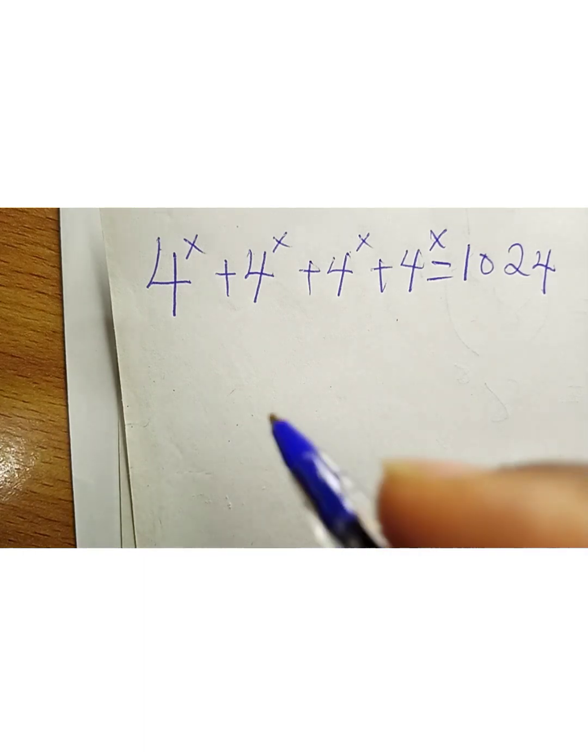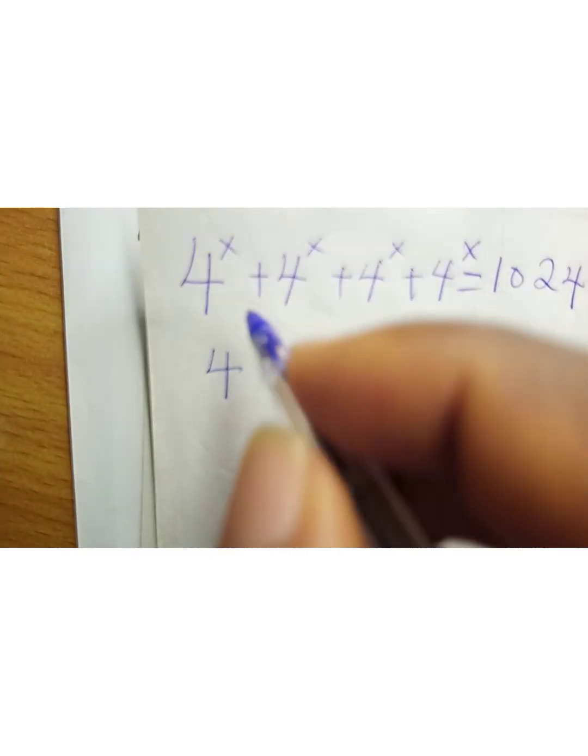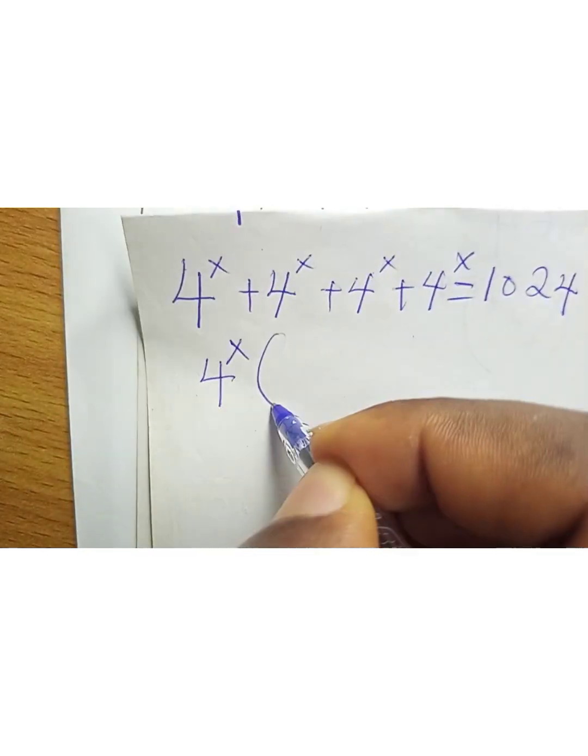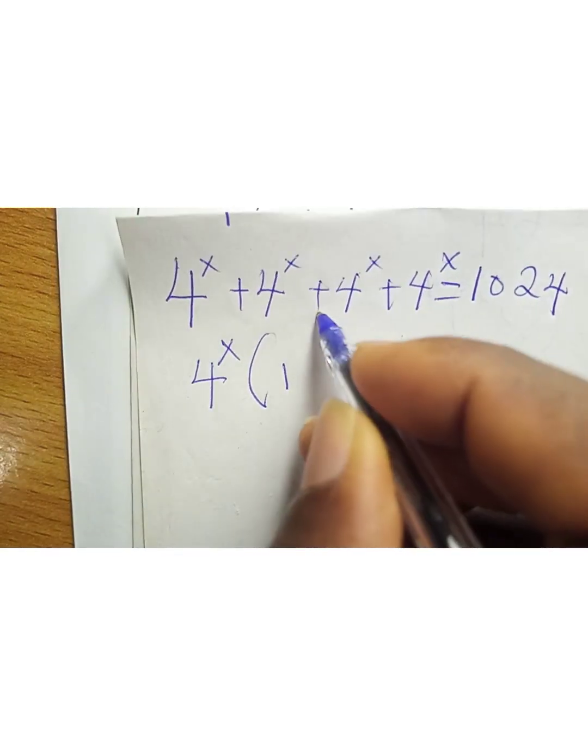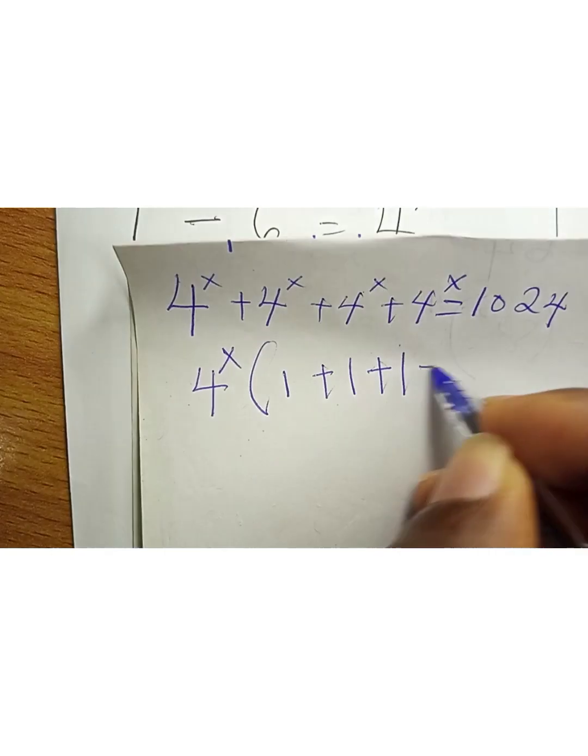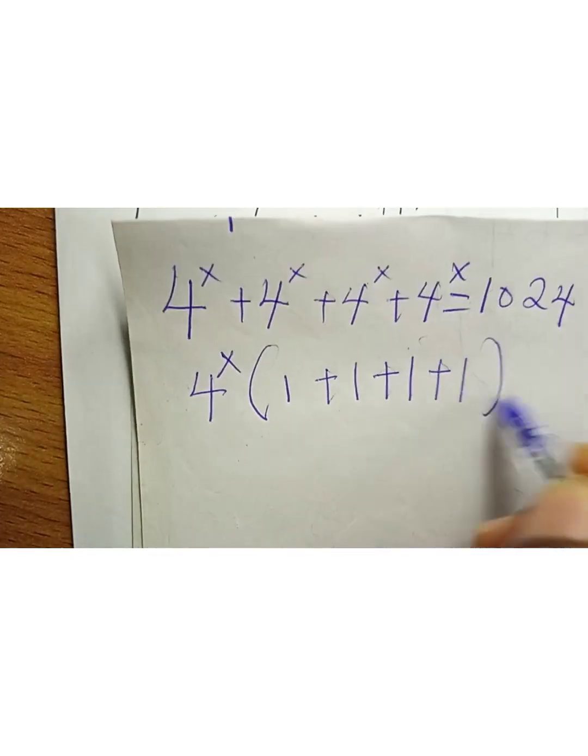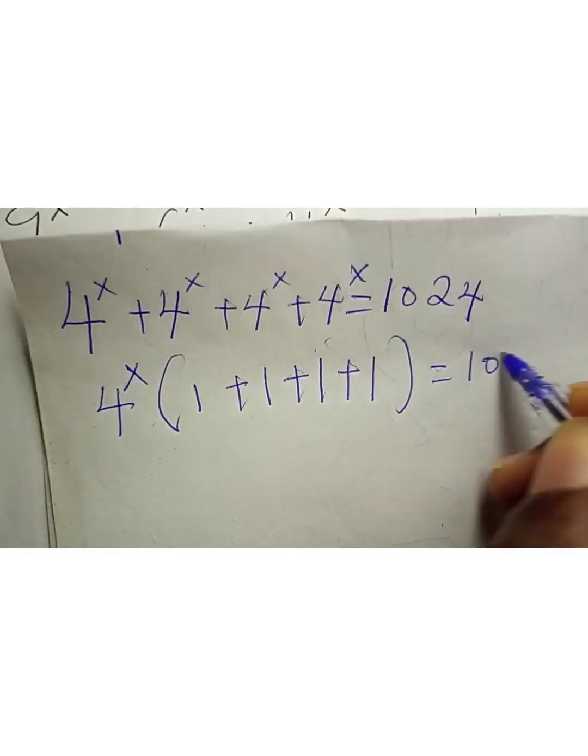For us to solve this, we can factor out 4^x. Each 4^x term divided by 4^x gives us 1, plus 1, plus 1, plus 1, equals 1024.